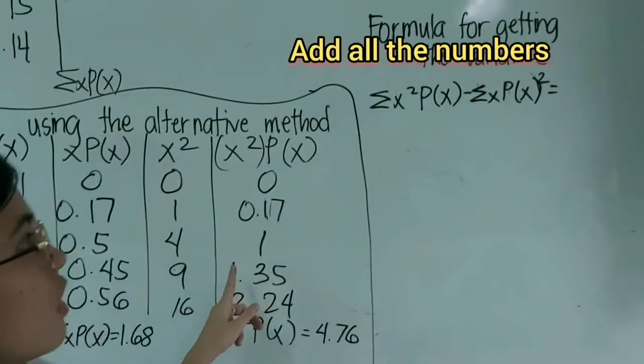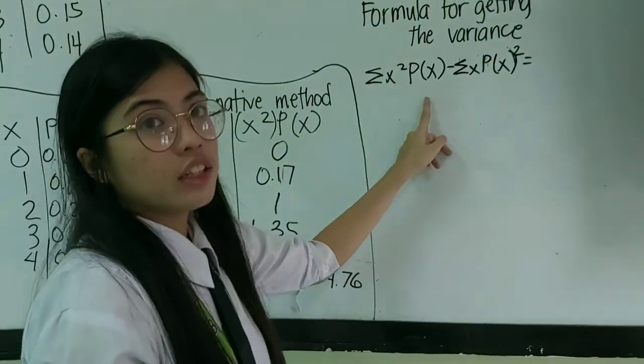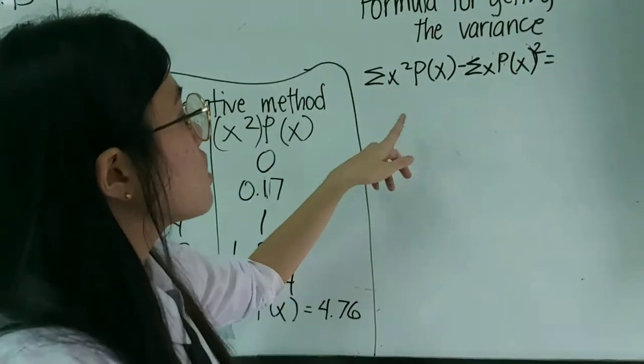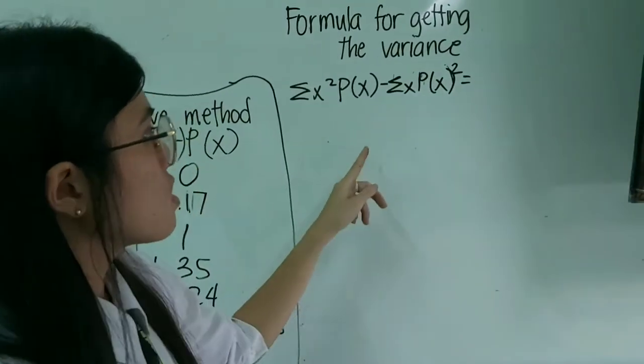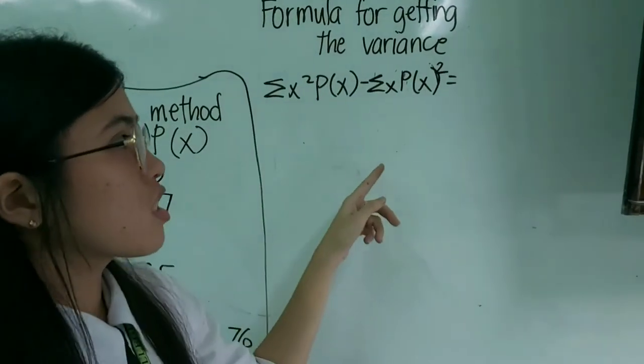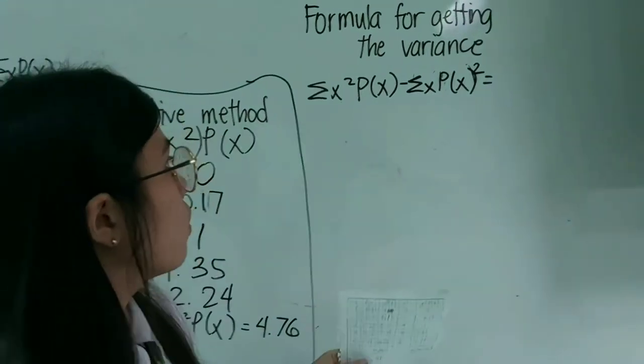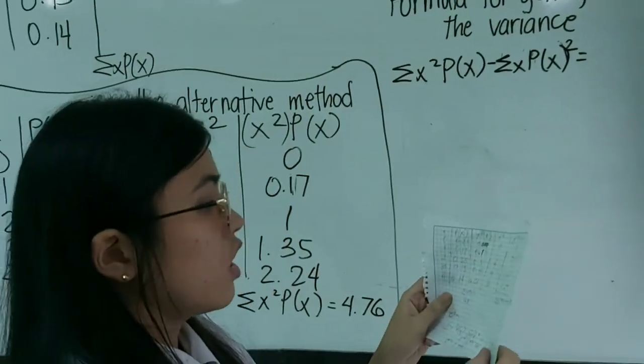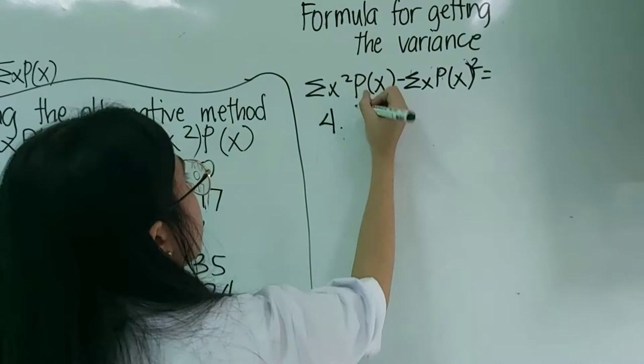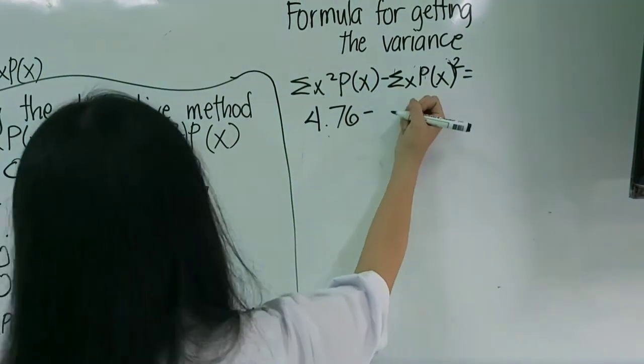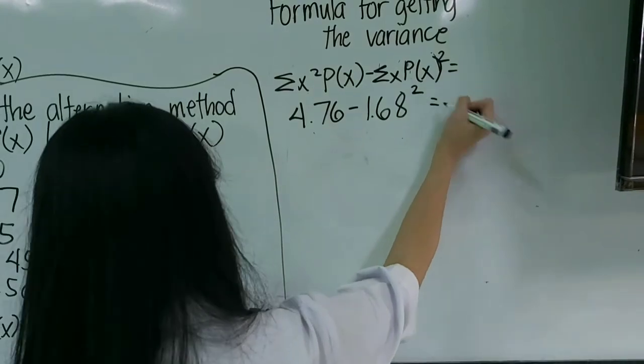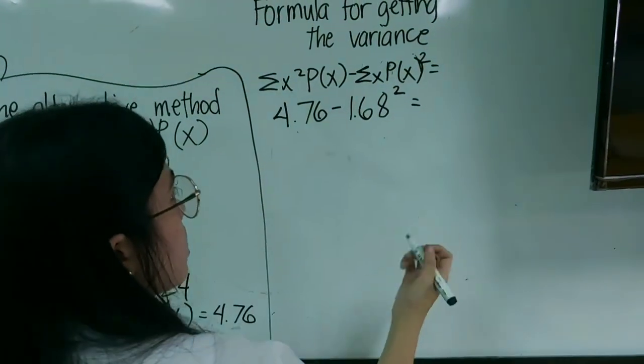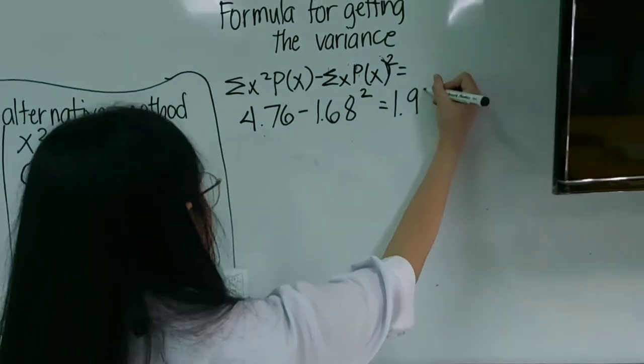And the answer you'll get is 4.76. After getting this, we have the formula for getting the variance, which is the summation of X squared, then P of X, minus summation of X P of X, but squared. So, we write in 4.76 minus 1.16 squared. Then, the answer you'll get is 1.9376.